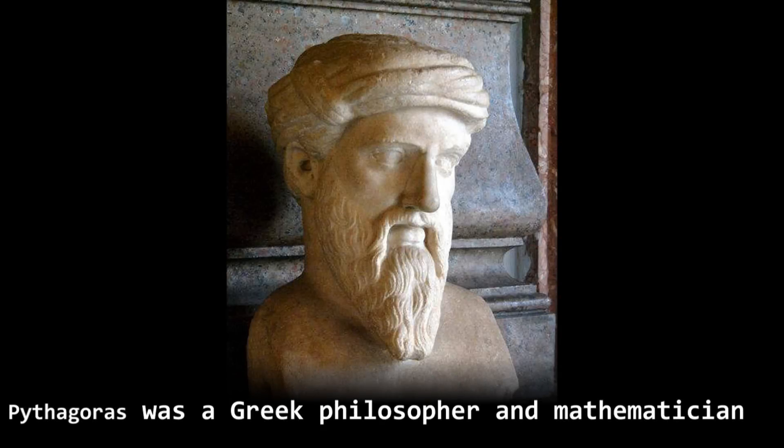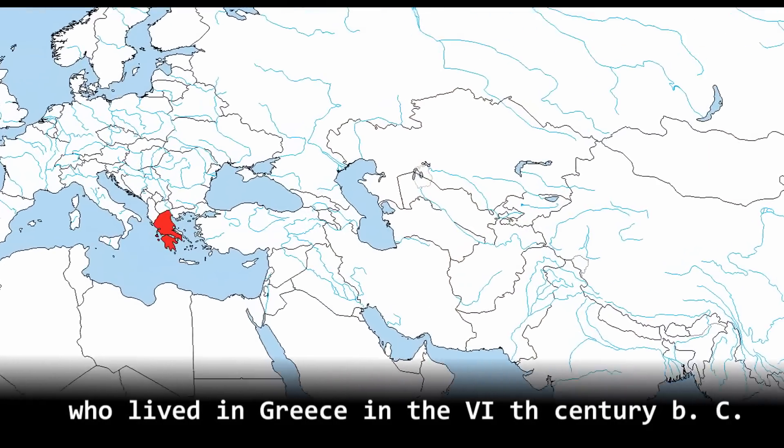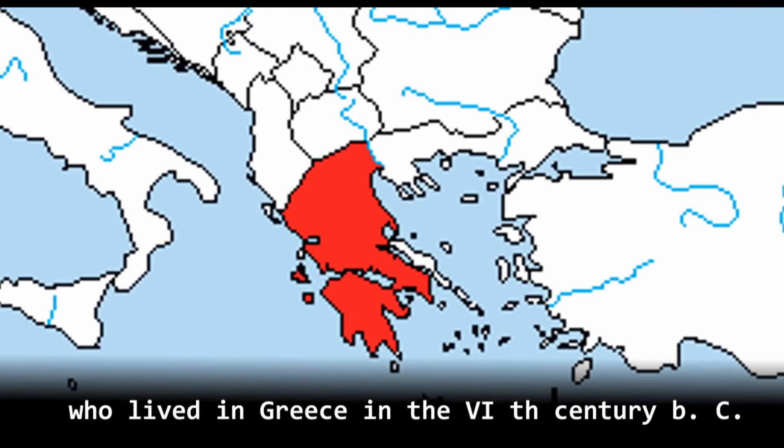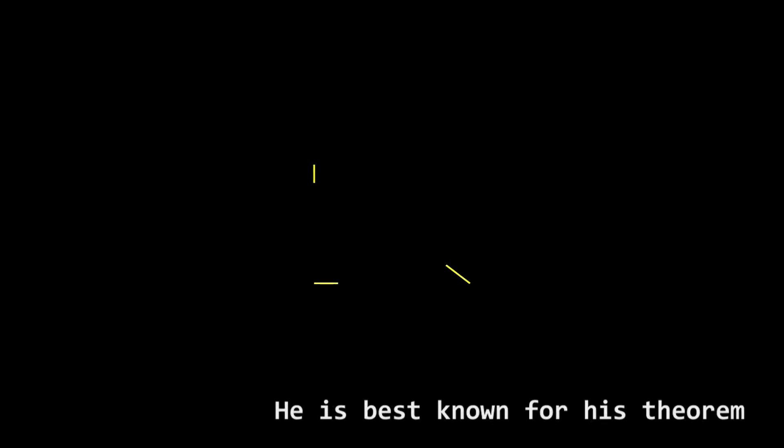Pythagoras was a great philosopher and mathematician who lived in Greece in the 6th century before Christ. He is best known for his theorem on right triangles.